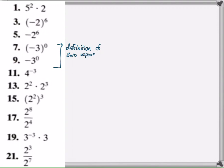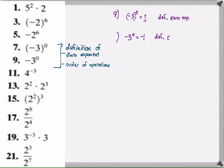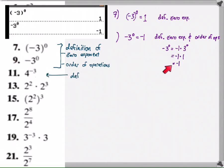These ones are just definition of zero exponent and order of operations. Negative three to the zero is 1 — there's nothing more than the definition of zero exponent. For number 9, negative three to the zero — without parentheses — is actually negative 1. That's where we use zero exponent and order of operations: do the exponent first, then multiply by negative one, giving that result as verified by the calculator.